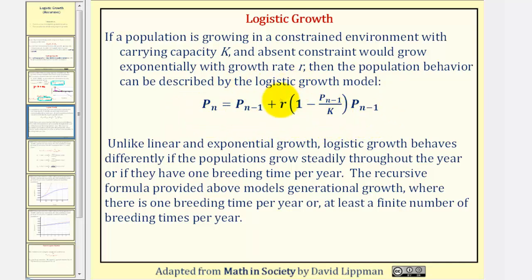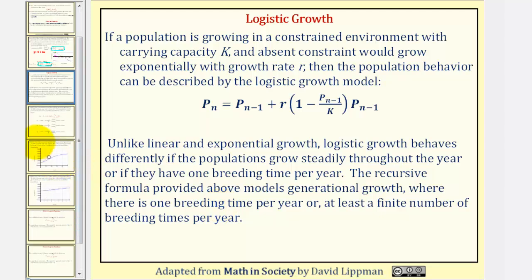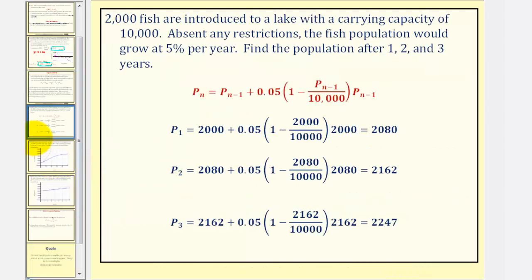Again, k is the carrying capacity and r is the growth rate absent constraint. Unlike linear and exponential growth, logistic growth behaves differently depending on whether populations grow steadily throughout the year or have one breeding time per year. The recursive formula models generational growth where there is one breeding time per year, or at least a finite number of breeding times per year. Going back to our fish example, let's say 2,000 fish are introduced to a lake with a carrying capacity of 10,000, and absent any restrictions, the fish population would grow at 5% per year.